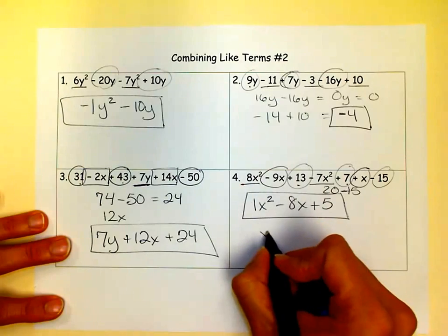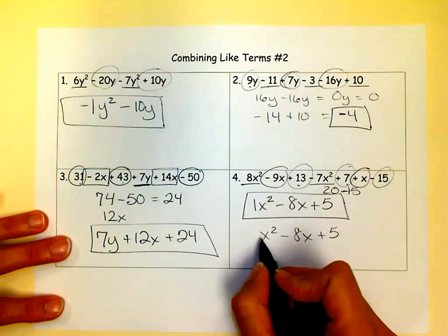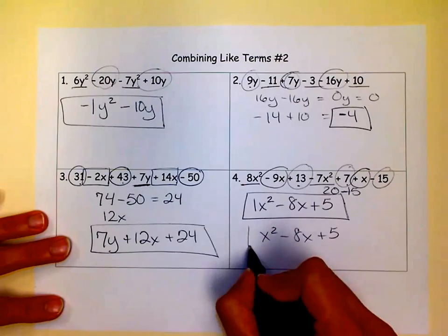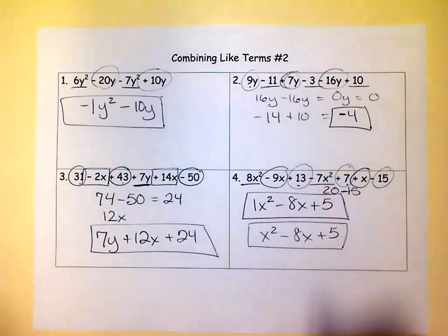And again, you don't have to have that 1 there. You could just write it like this. And later, as you get on in math, you won't see them put a 1 in there. But if you want to at this point, no one's going to count you wrong for it. So good luck with that. Make sure you're just combining the things that can be combined. That's number 1. And number 2, watch the signs in front of each term. Good luck. M squared, signing out.